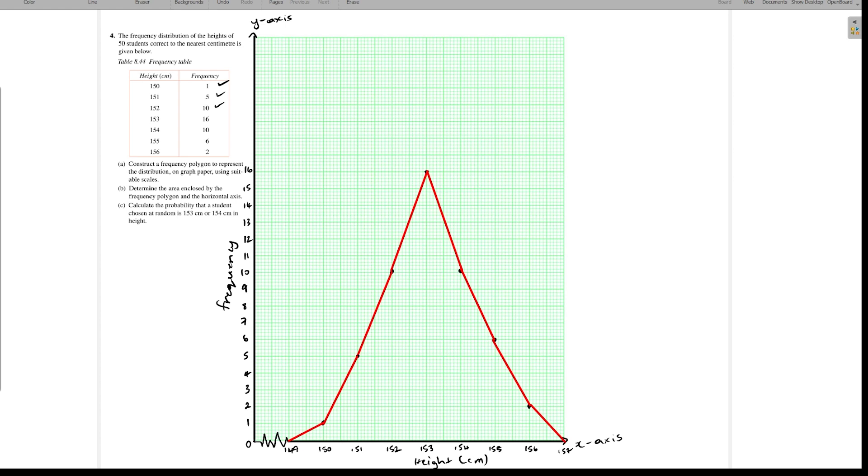Now after we have constructed our frequency polygon, the next step would be to, from each point represented on our graph - these are our points on the graph - we would need to draw broken lines connecting to the x-axis. So use your ruler and draw broken lines connecting to the x-axis from each point. Once we have our connections, we can now go ahead and calculate the area. So we have completed part A of this question, to construct the frequency polygon.